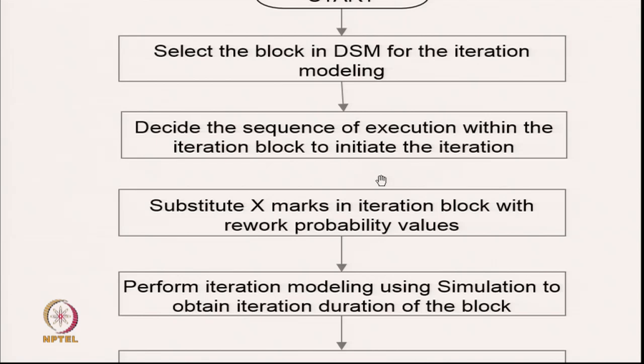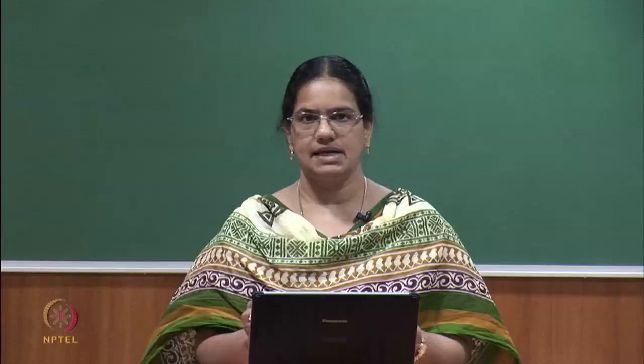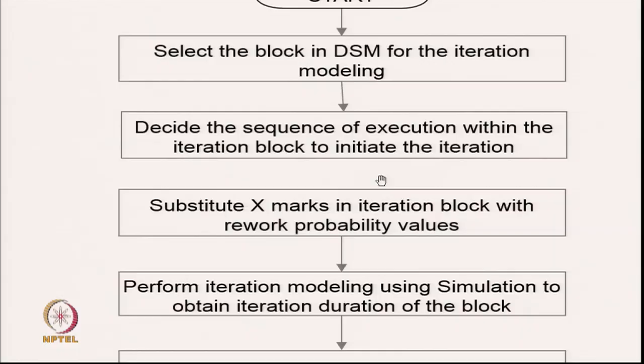You should decide whether the sequence is ACEF, CAEF, or CEF AE - whatever it is, decide the sequence of execution, which implies tearing has to be done. Then substitute the X marks in the iteration block with the rework probability values. In the example shown, there are so many X marks - you should know the probability for choosing an assumption and how much rework will happen in those activities and successor activities.